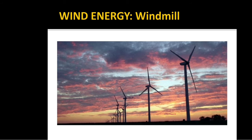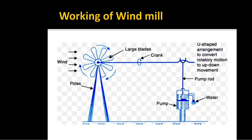Let us know how this windmill works. The windmill works on the principle that when the blowing wind strikes across the blades of the windmill, it exerts a force which rotates the blades. The rotational effect is due to the spatial design of the blades.